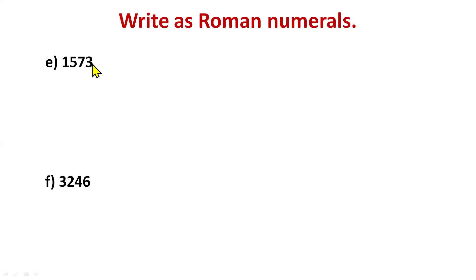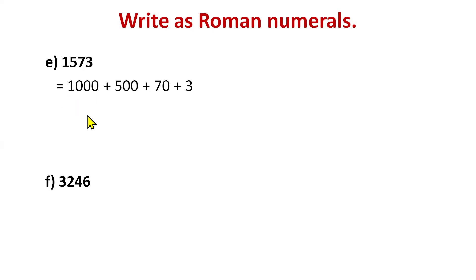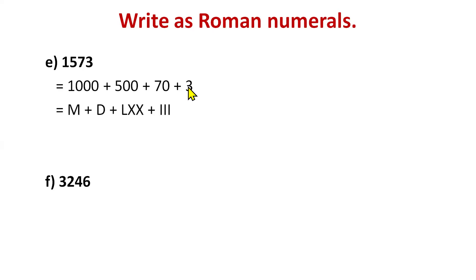Now a bigger number: 1573. Decompose it: 1000 + 500 + 70 + 3. 1000 is M, 500 is D. For 70, take help from 50: LXX. And 3 is III. So 1573 is MDLXXIII.